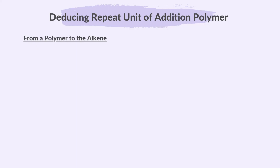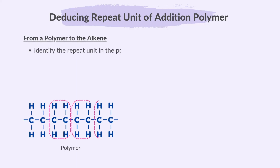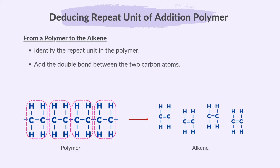To go from a polymer back to the alkene, identify the repeat unit in the polymer, add the double bond between the two carbon atoms, and remove the bonds from both ends of the repeat unit. In this case, the alkene is ethene, C₂H₄.